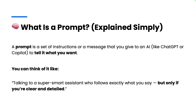Let's start with understanding what a prompt is. Simply put, a prompt is nothing but a set of instructions or a message that you give to an AI — things like ChatGPT, Copilot, Meta AI, or Google Gemini. You can also think of it like a super smart assistant who follows exactly what you say, but only if you are clear and detailed, because your assistant comes with a set of capabilities and is super efficient at returning information.